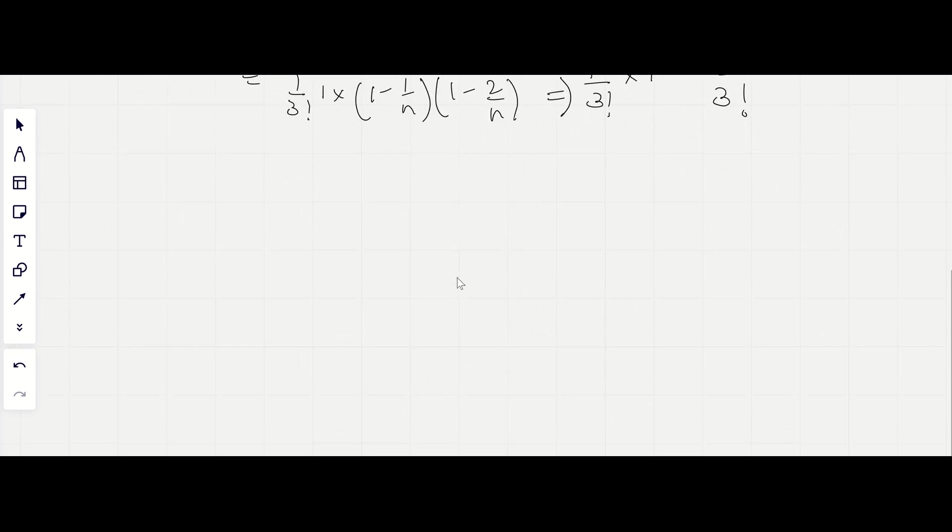So the expansion (1 minus 1 upon N) to the power N reduces to 1 minus 1 plus 1 upon 2 factorial minus 1 upon 3 factorial plus 1 upon 4 factorial, and so on.